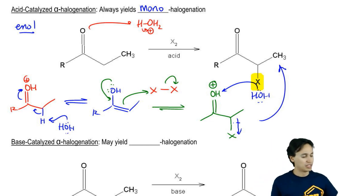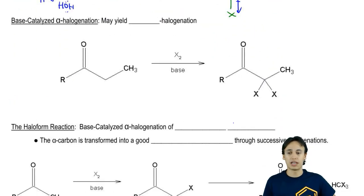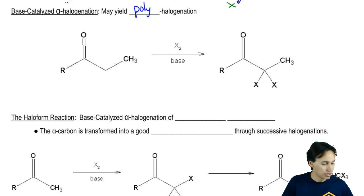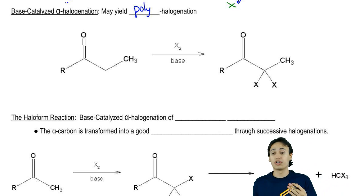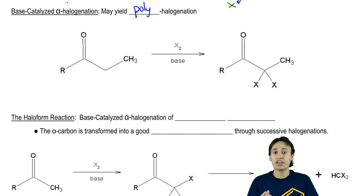Awesome. Now, this is in contrast to the base catalyzed mechanism. In the base catalyzed mechanism, you may yield polyhalogenation. The reason is you're basically going to yield as much halogenation as you have alpha protons. The reason being that in a base catalyzed mechanism, the X's being there is just going to make it more reactive the second time. Let me show you.